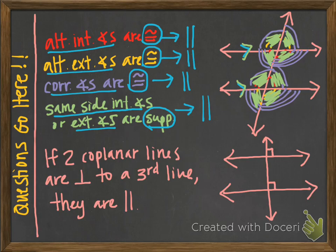The last way you can show that lines are parallel is if you have two lines that are both perpendicular to a third line. If two lines are both perpendicular to a third line, then those two lines are parallel — they've got to be.